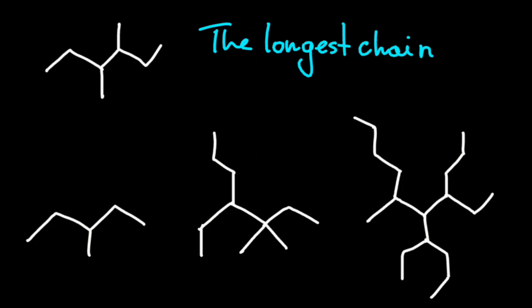For example, in this compound the longest chain can look like this and it will consist of four carbon atoms, or maybe like this and it will have five carbon atoms, or maybe we can find even a longer path where the sequence is six carbon atoms.